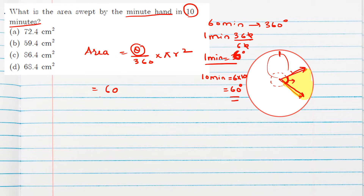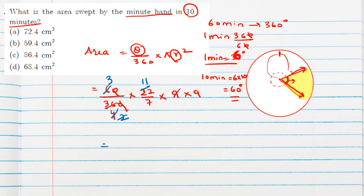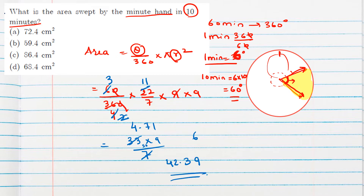Now applying the formula: theta = 60, π = 22/7, and radius (minute hand length) = 9 cm. So area = (60/360) × (22/7) × 9 × 9. After cancellation, we get 33 × 9 / 7, which gives approximately 42.39, which we round to 42.4 cm².